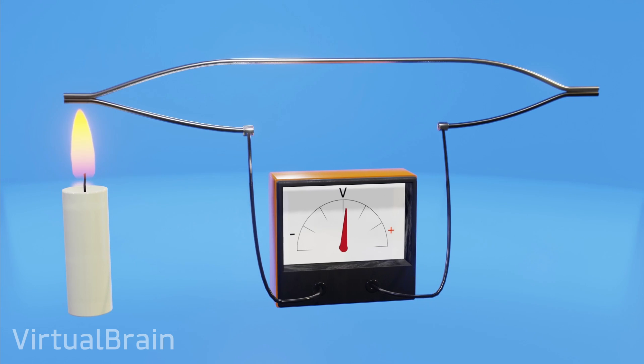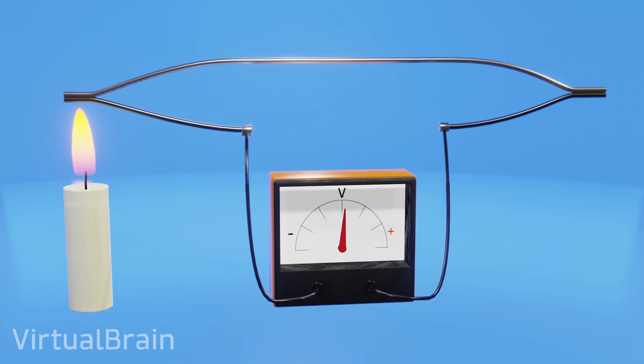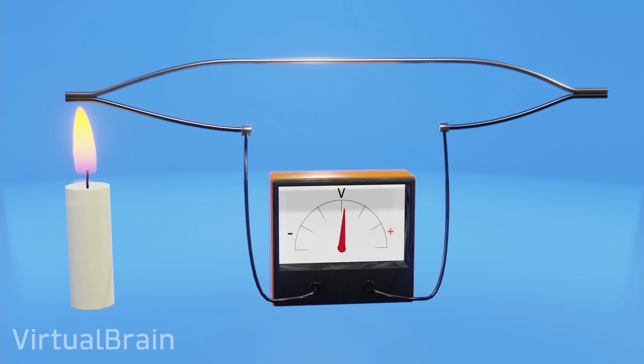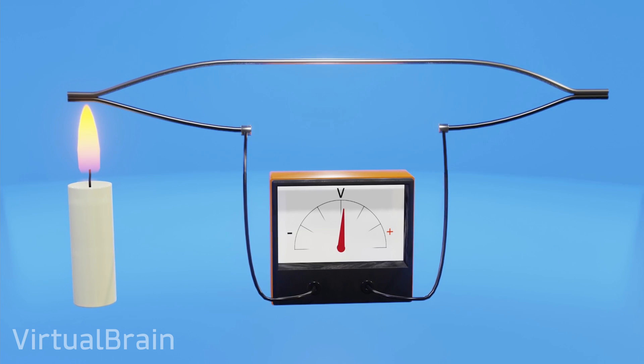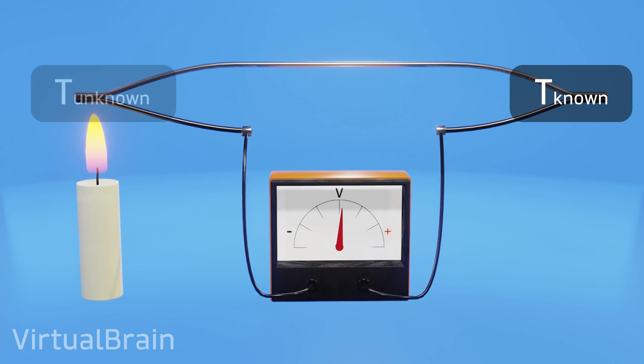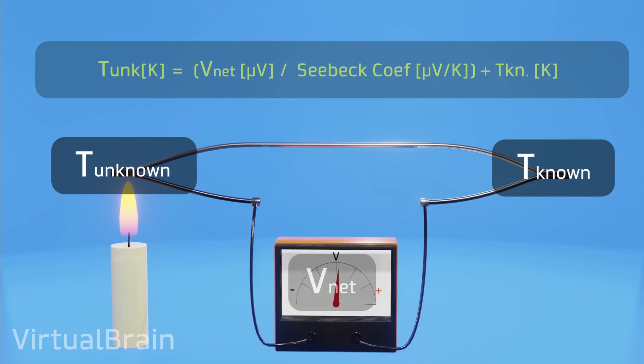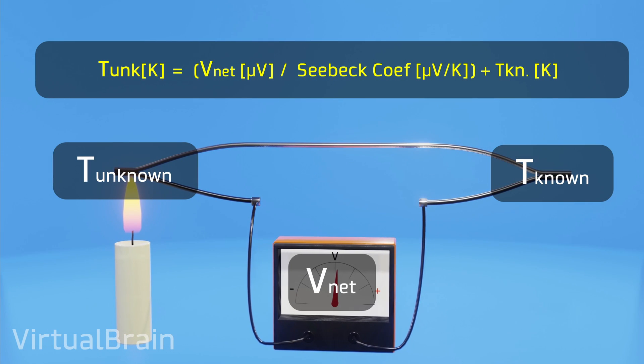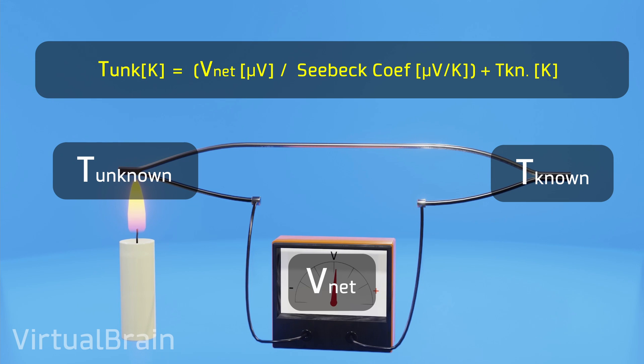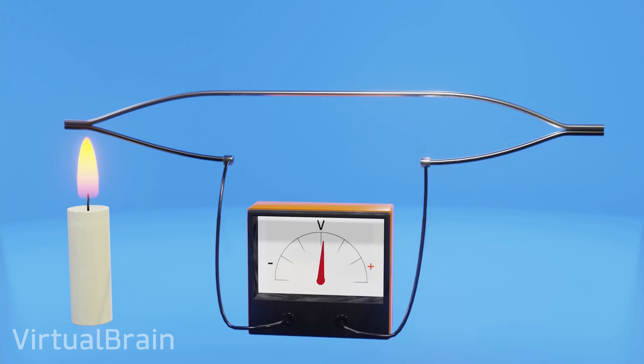But that does not mean that we cannot take advantage of this phenomenon, as we will be able to relate a temperature difference with the generation of a voltage. And therefore, if we position one end in a place with a known temperature and the other end in a place with an unknown temperature, we can know its value by measuring the voltage generated, dividing it by the Seebeck coefficient of the pair of materials and adding the reference temperature. These temperature measuring devices are known as thermocouples.